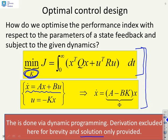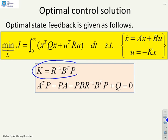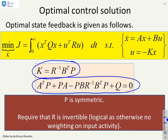We're going to give you the solution. The key point is the solution is simple to find and simple to implement. The solution is given by your state feedback K equals R inverse B transpose P, where P is solved using this equation here. P is symmetric.